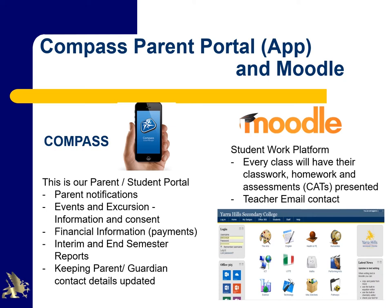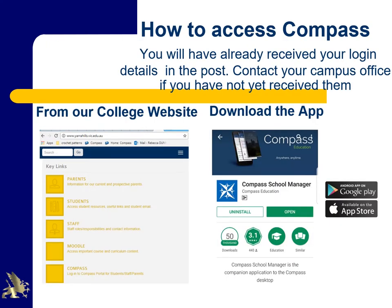So how do you access Compass? By now you should have already received your login details in the post. Please contact your campus office if you've not yet received them. You can access Compass via our college website, yarrahills.vic.edu.au, and follow the links and enter your details and passwords. Or you can download the Compass app, install it and enter your details as well.